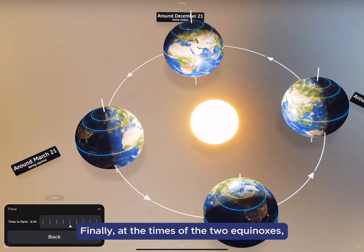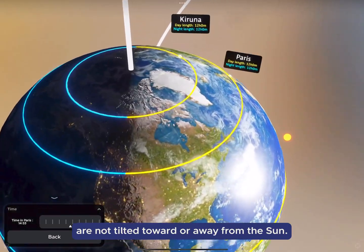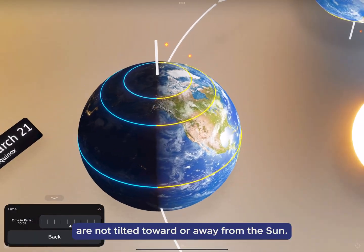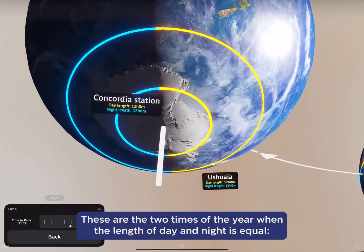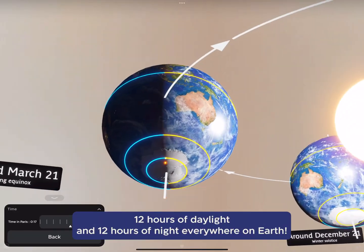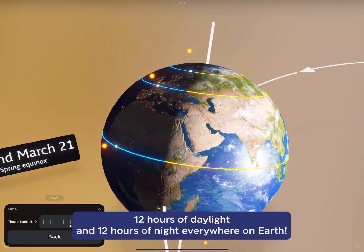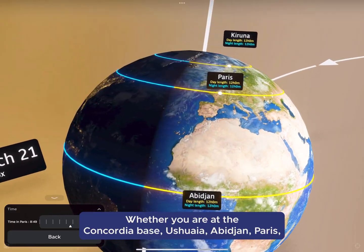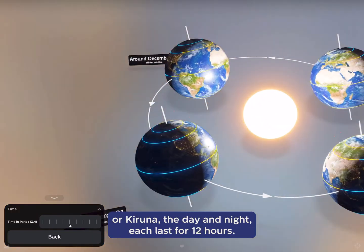Finally, at the times of the two equinoxes, the northern hemisphere and the southern hemisphere are not tilted toward or away from the Sun. These are the two times of the year when the length of day and night is equal. 12 hours of day and 12 hours of night, everywhere on Earth. Whether you are at the Concordia base, Ushuaia, Abidjan, Paris or Kiruna, the day and night each last for 12 hours.